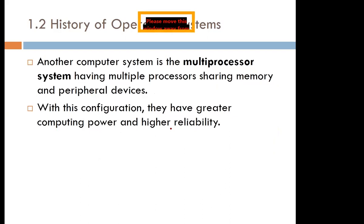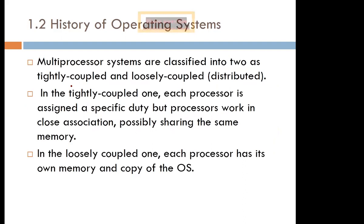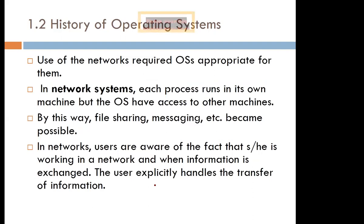There is also the multi-processor system — more than one processor sharing peripherals and resources. These days we have dual-core processors, which are examples of multi-processor systems providing greater computing power and higher reliability. Multi-processor systems can be tightly coupled, where processors are assigned specific duties but work in close association, or loosely coupled, where each processor has its own memory and its own copy of the operating system.